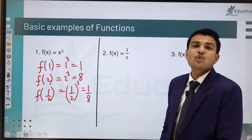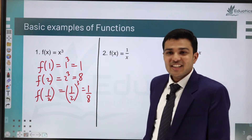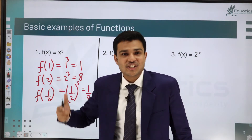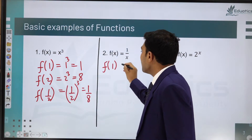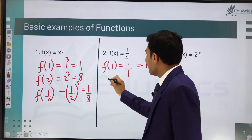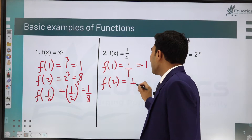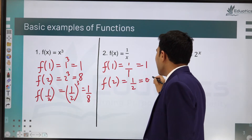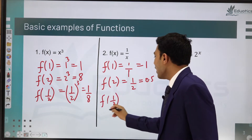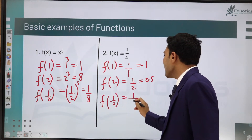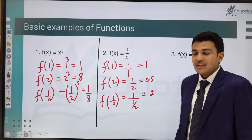Next example: f(x) = 1/x. If we give input 1, the output is 1/1 = 1. If we give input 2, the output is 1/2 = 0.5. If we give input 1/2, the output is 1/(1/2) = 2. So for each input we get a corresponding output.